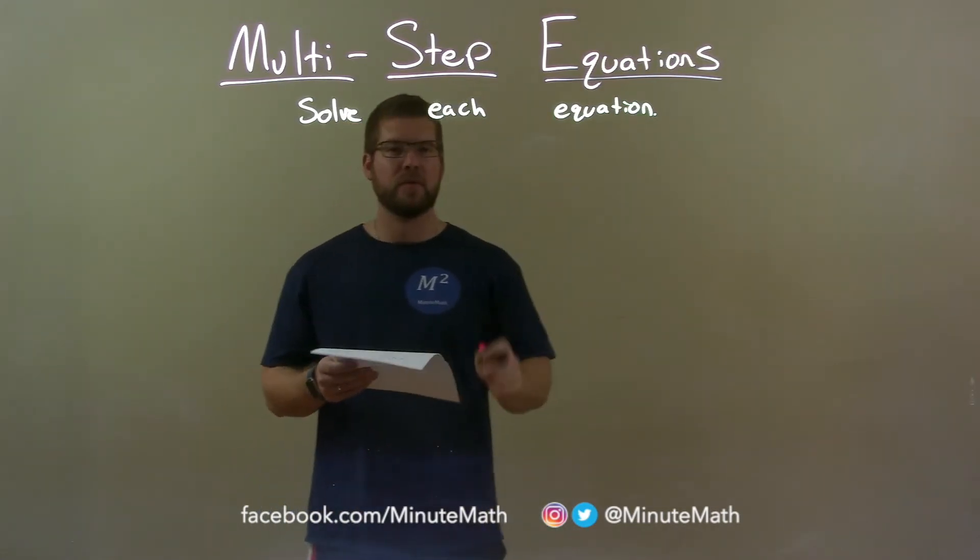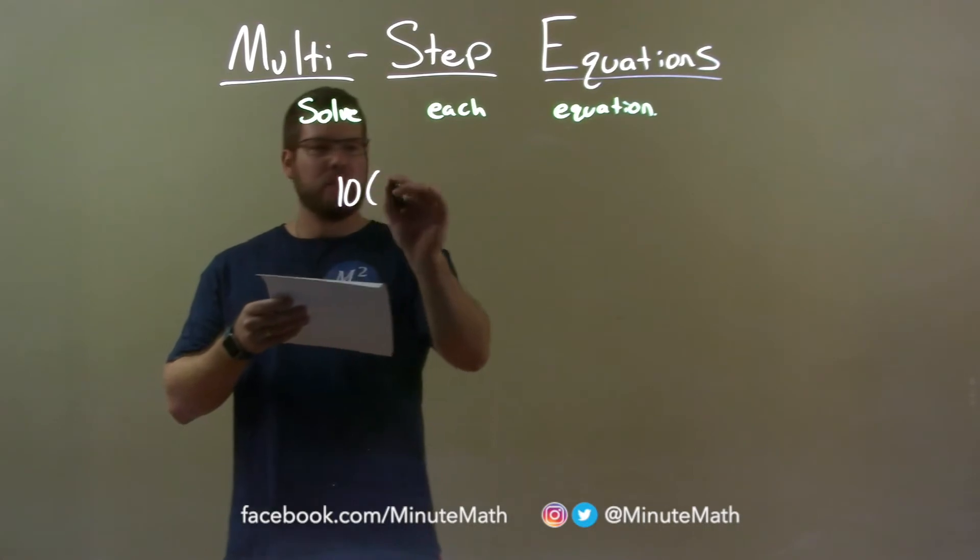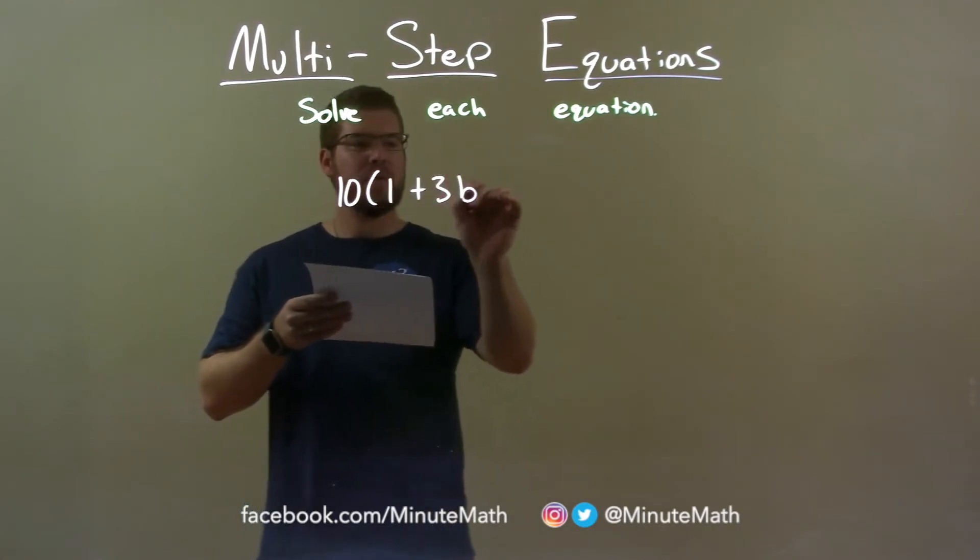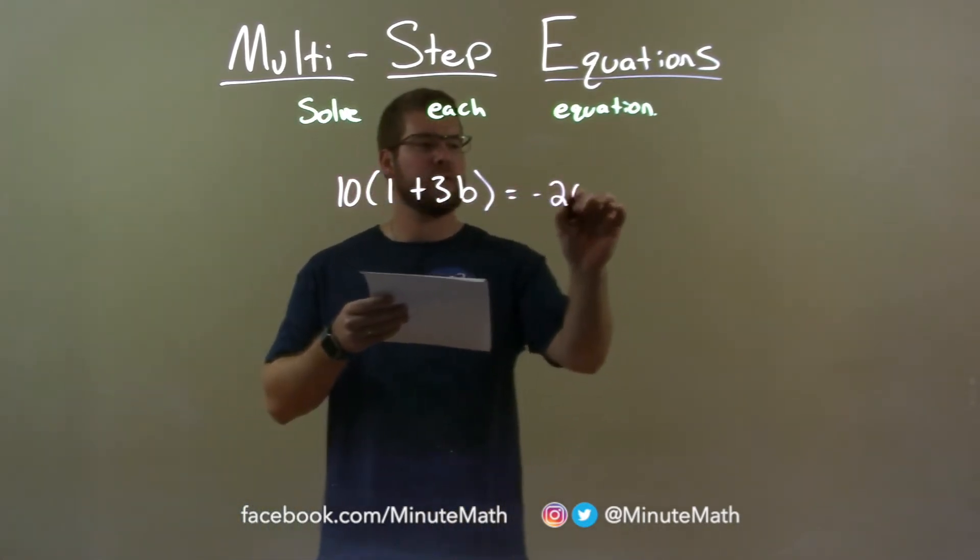Now, if I was given this equation, 10 times 1 plus 3b equals negative 20.